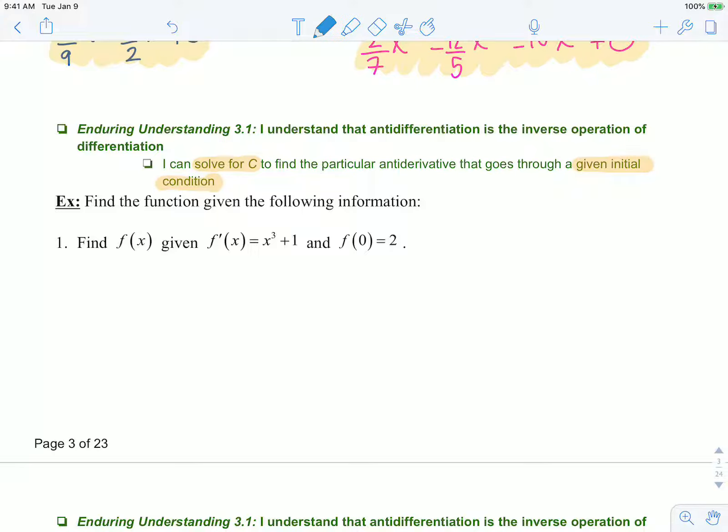So the problem below, f of x is what we're trying to find given that f prime of x equals x cubed plus 1 and that f of 0 equals 2. So f of 0 equals 2 is our initial condition, a point that we know our function goes through.